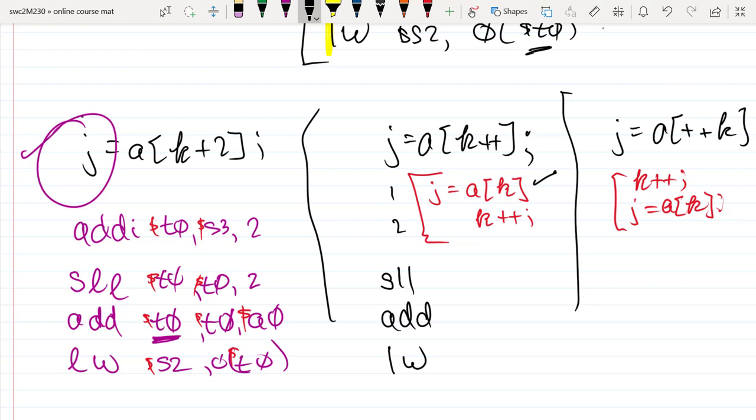and add and a load word because I have to multiply the index by 4 to get that element's distance away from the beginning of the array. And I'll store it into a temporary variable.